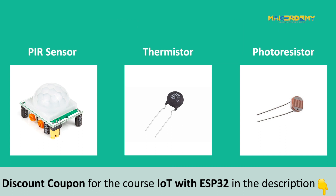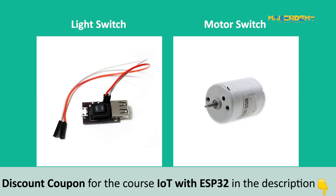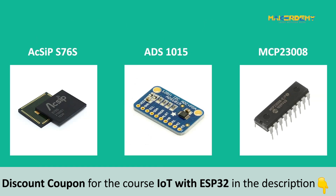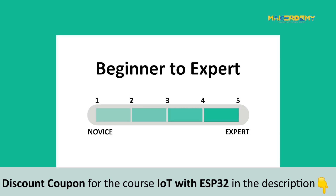This platform supports sensors such as the PIR sensor, thermistor, photoresistor, and many more. The light switch and the motor switch are some of the actuators supported by the platform. KN also has support for LoRaWAN devices and extensions for PWM analog and digital inputs.